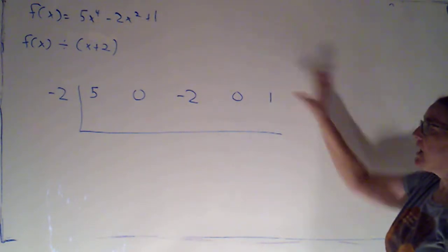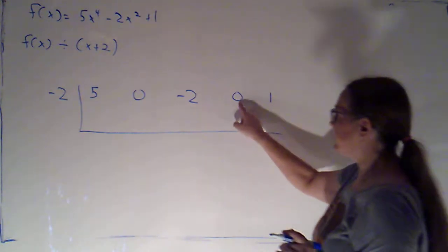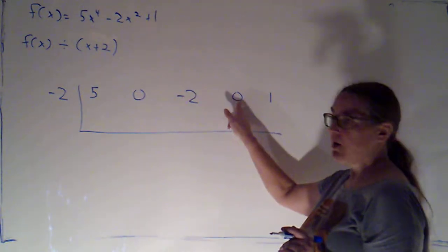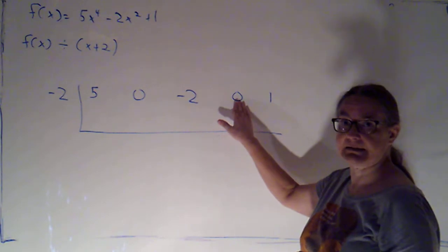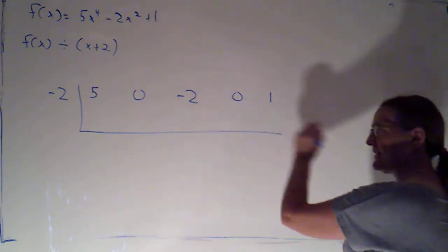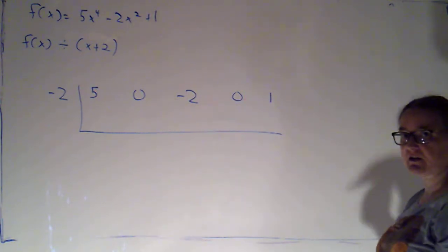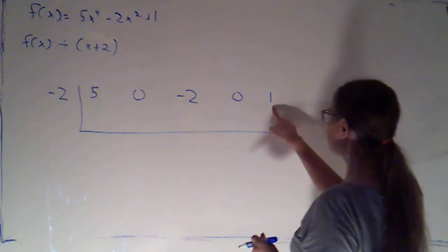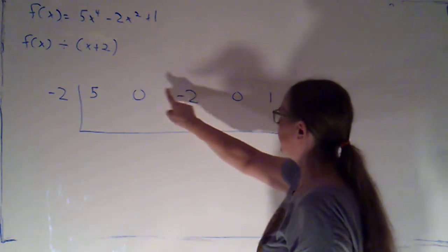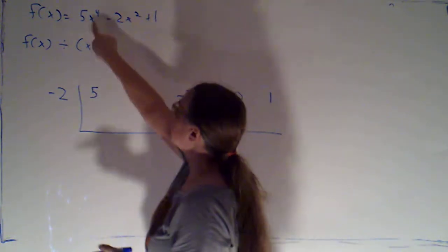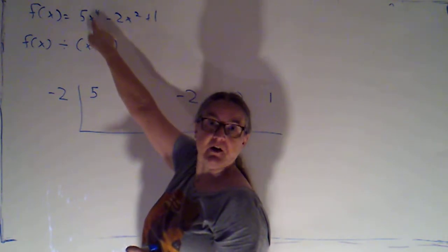So I've set it up here. Do be super, super careful that you've got those zeros in there. We didn't have any x cubed, we didn't have any x's. I always like to, once I've written down what I think my coefficients are, just double check. Constants, x to the 1st, 2nd, 3rd, 4th, yes, that first one was supposed to go with the 4th power.